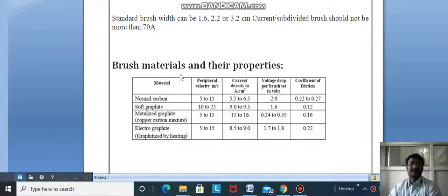Brush materials and properties: Normal carbon has peripheral velocity 5-15, current density 5.5-6.5, voltage drop 2, coefficient of friction 0.22-0.27. Metalized graphite (copper-carbon mixture): 5-15, 15-16, 2.2-3.5, 0.16. Electro-graphite: 5-15, 8.5-9, 1.72, 0.22. These are the different materials.